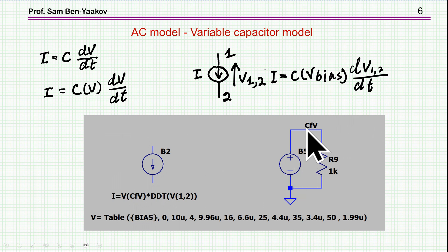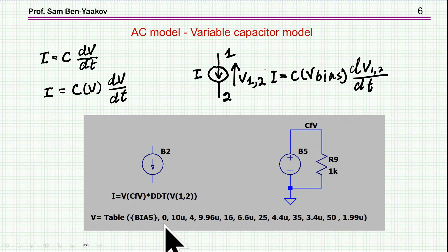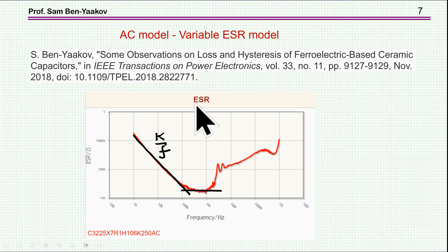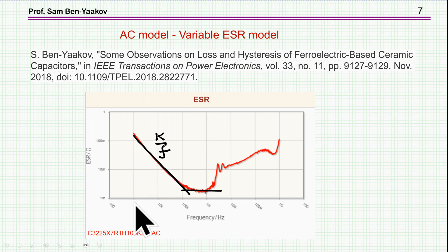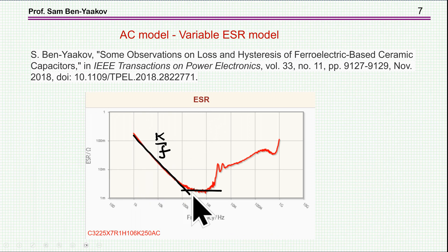Here I have a behavioral current source defined as the voltage at this node — which represents the capacitance — times the derivative of the voltage across the capacitor. I'm generating a voltage numerically equivalent to the capacitance as a function of bias using a table. The table has an input of the DC bias set to a given point, and the numbers are read directly from the datasheet plot. The ESR modeling is based on a paper I published showing that in most Class II ceramic capacitors, the ESR as a function of frequency follows a straight line in log-log scale at lower frequencies and then tapers off to approximately a constant value.